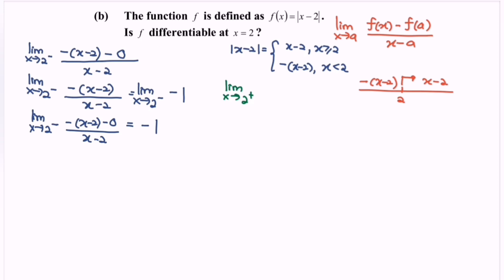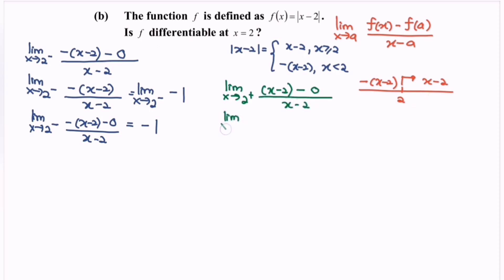We substitute f(x) for the right-hand limit. Referring to the number line for x greater than 2, the function is x - 2, so we compute: lim(x→2⁺) [(x - 2) - 0] / (x - 2). We already know f(2) = 0. Simplifying, the limit as x approaches 2 from the right equals 1.